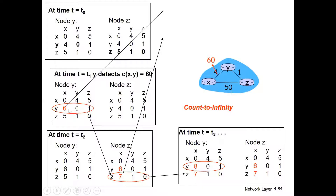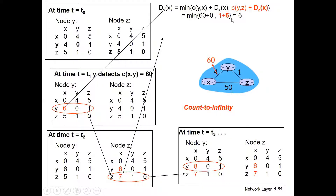Y detects the XY link cost change and Z is 60. The next step is the initialization of X, and as the scenario is given directly, we will execute the algorithm with this information.